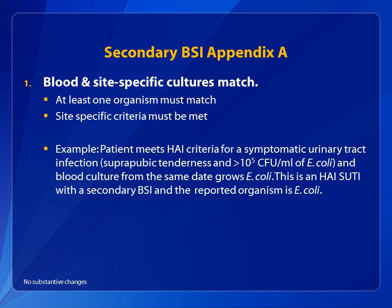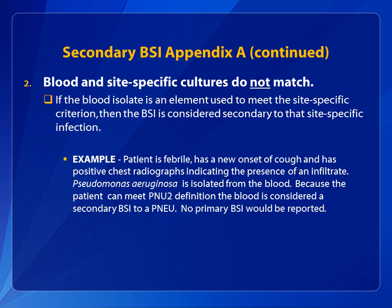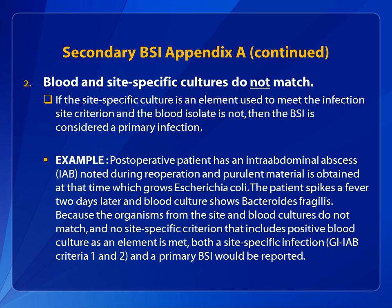Appendix 1, Secondary BSI Infection Guide, should continue to be used to determine appropriate attribution of secondary BSIs. Primary site-specific criteria, as defined in the CDC NHSN Surveillance Definitions for Specific Types of Infection, Chapter 17, must be met first in order to apply the secondary BSI guidance. The first guidance to consider is whether there is at least one matching organism for both the blood and the site-specific culture. If the blood and site-specific cultures do not match, but the positive blood culture is an element used to meet the primary site infection criterion, then the BSI is considered secondary to the primary site-specific infection. If the site-specific criteria does not use the blood culture as an element and the organisms do not match, then a primary BSI must be identified.